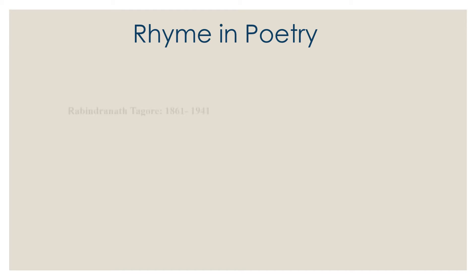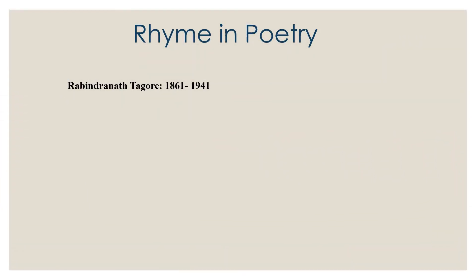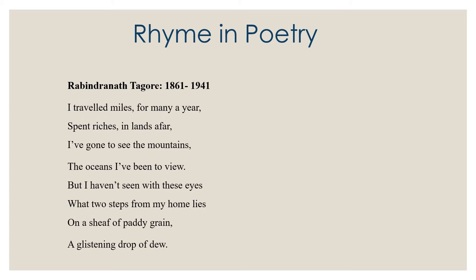For instance, the following lines by Tagore — the winner of the Nobel Prize in Literature for 1913 — may be easy to understand and render into Arabic, but the word choice and the use of comparable figures of speech that could be as appealing to the target readers could differ from one person to another: 'I traveled miles for many a year, spent riches and lands afar. I've gone to see the mountains, the oceans I've been to view, but I haven't seen with these eyes what two steps from my home lies — when a sheave of paddy grains, a glistening drop of dew.'